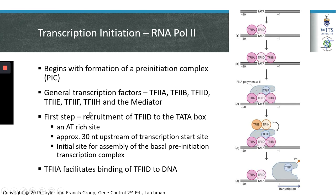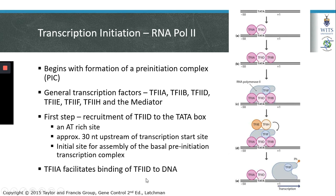The first step in transcription involves recruitment of transcription factor 2D to the TATA box. The TATA box is an AT-rich site located approximately 30 nucleotides upstream of the transcription start site. Binding of TF2D to the TATA box serves as the initial site for assembly of the basal pre-initiation transcription complex. Transcription factor 2A also binds to the TATA box along with TF2D and facilitates binding of TF2D to the DNA.